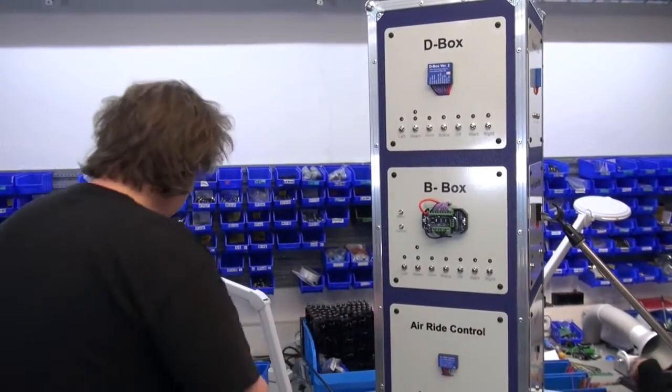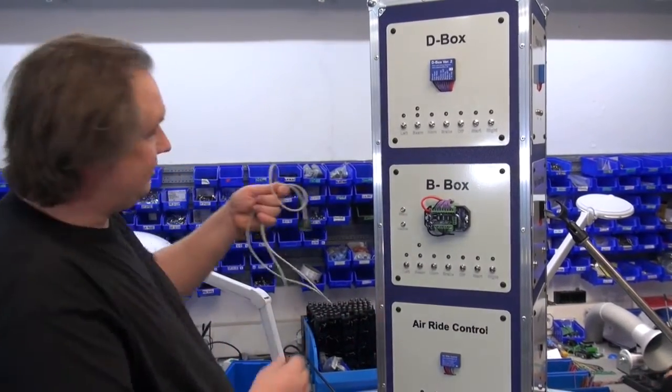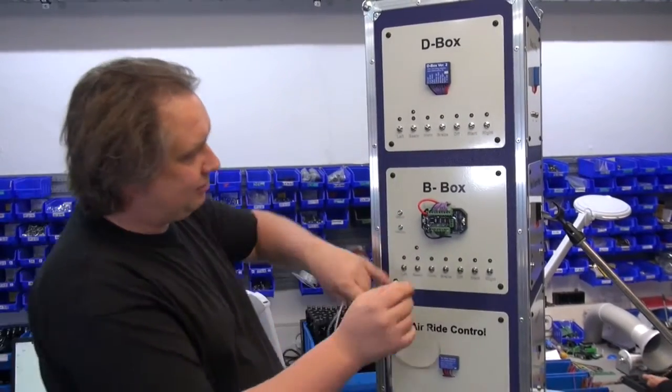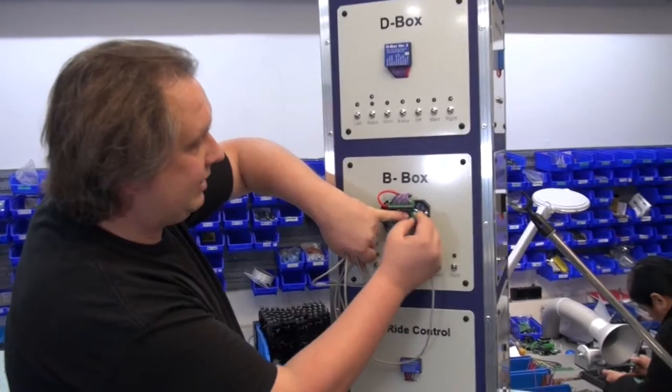What you need for this is the B-Box itself and the RFID antenna with this little plug. It must be plugged here on this four port plug.